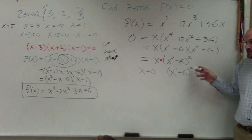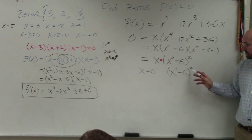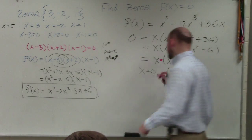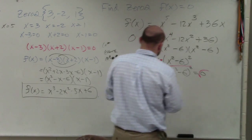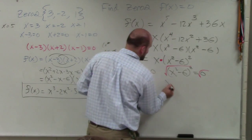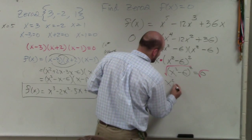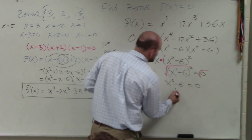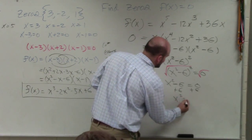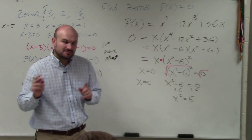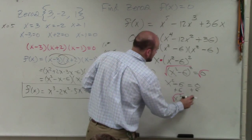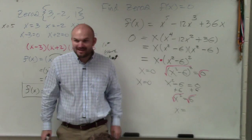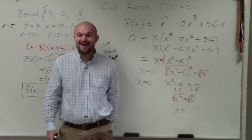Here, this squared term — we can undo that by taking the square root. So x equals 0, and x squared minus 6 equals 0. To solve, you add 6, giving x squared equals positive 6. Now, here's what I want you guys to understand — when I take the square root, what should the value be? Confidently.